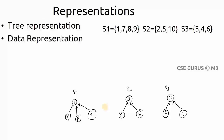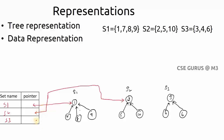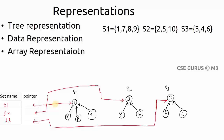The second representation is data representation. Here you write what sets you have — S1, S2, S3 — and use a pointer to connect each set name to the root node of its corresponding tree. For S1, the pointer connects to its root node; similarly for S2 and S3. This representation simply gives a link via a pointer to the root node of each set tree. This is called data representation.